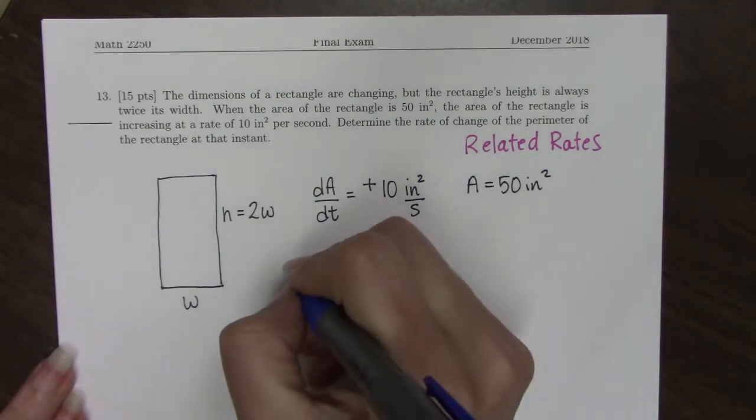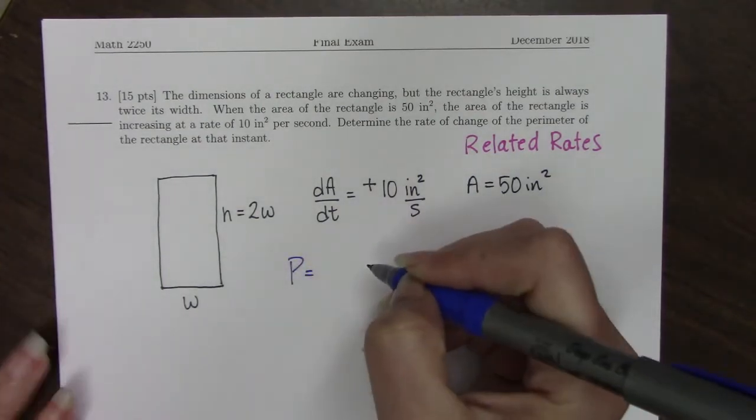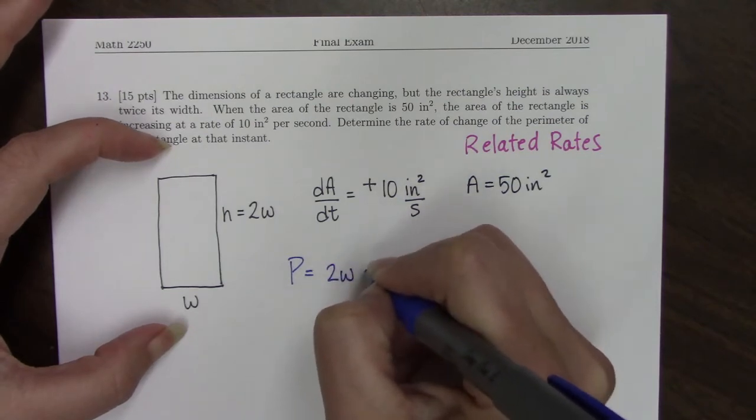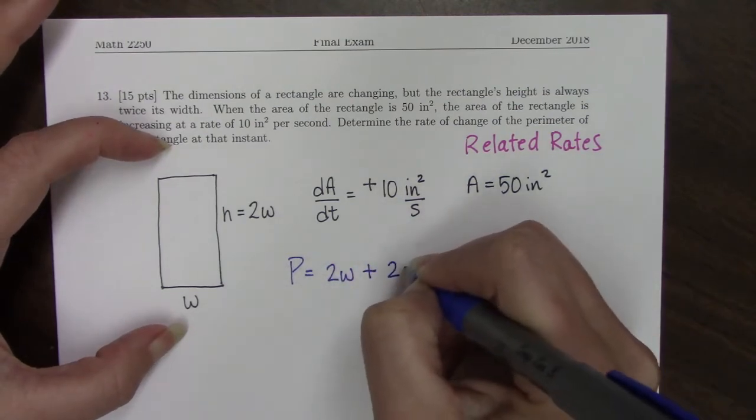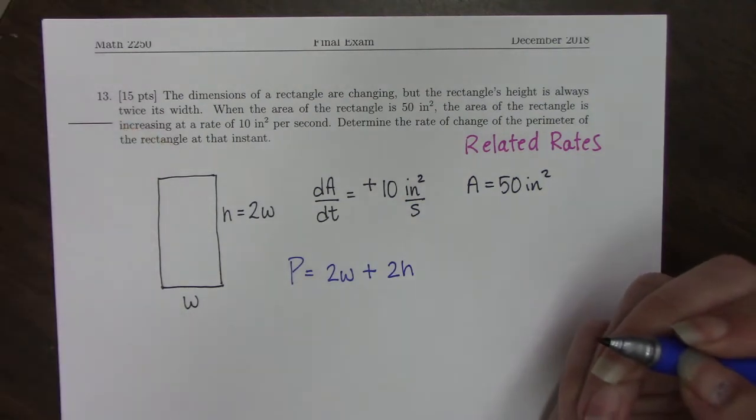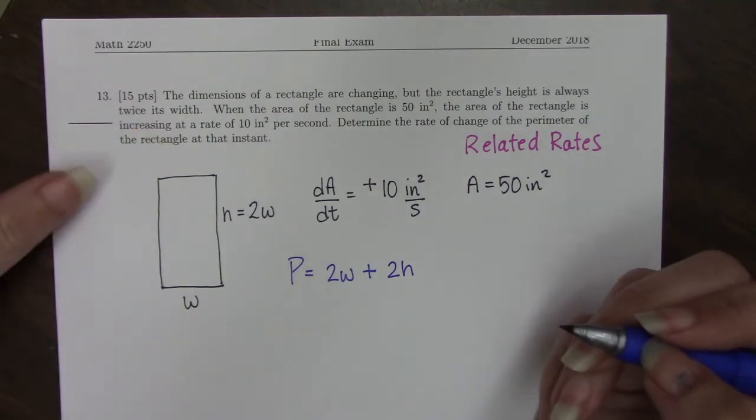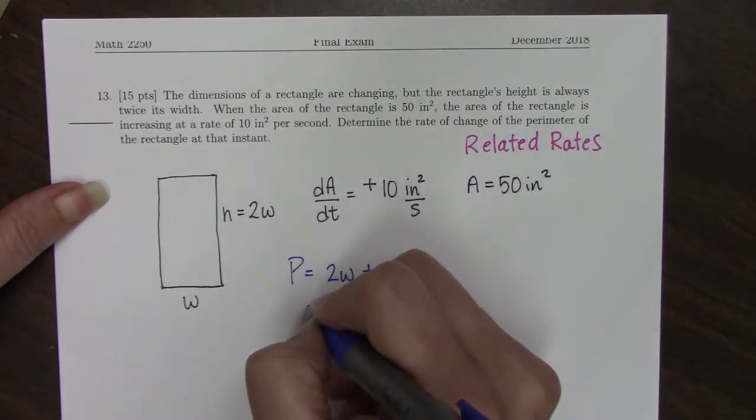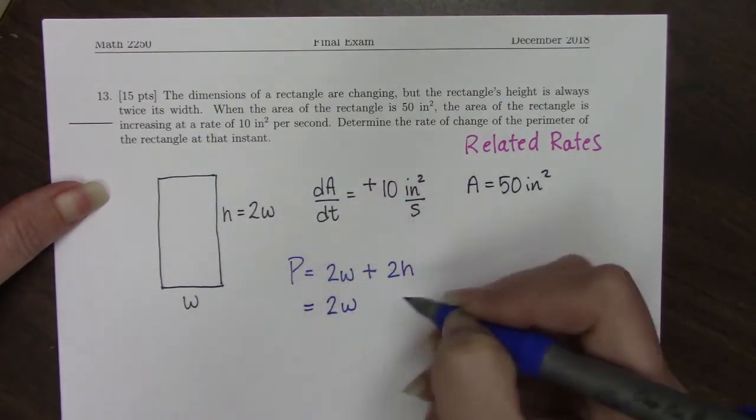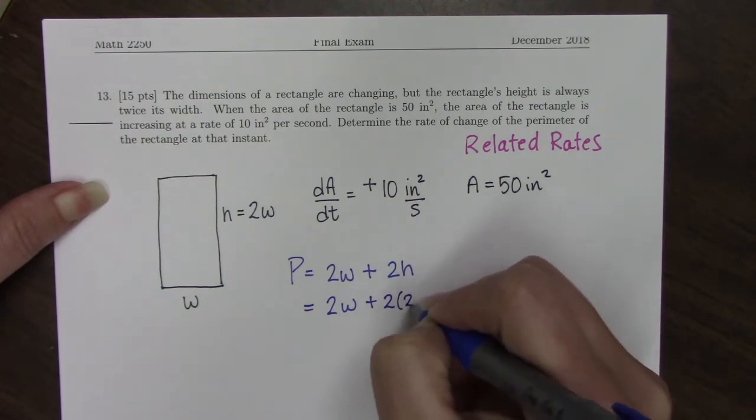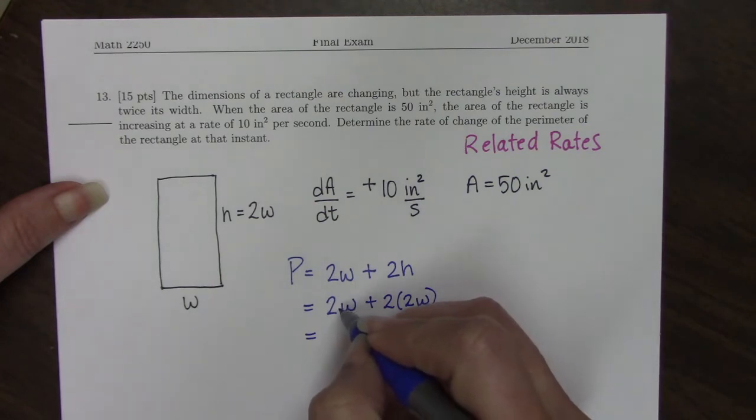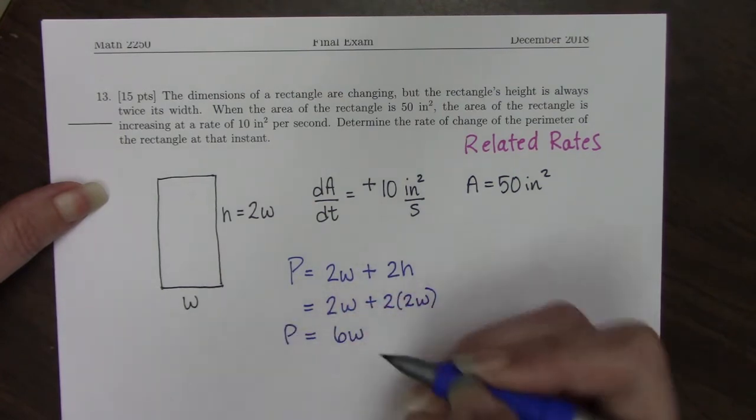So the perimeter of this rectangle, we have two sides of length W and we have two sides of length H. But I want to try to reduce this down to one variable. So since I know that H is 2W, I can write this formula now as 2W plus 2 times 2W. And this simplifies to 2W plus 4W, which is 6W.